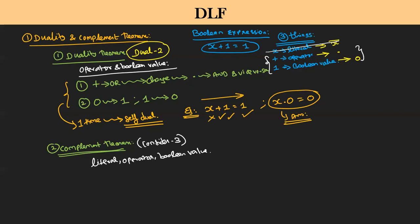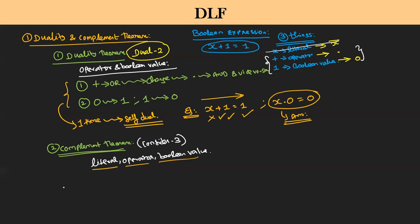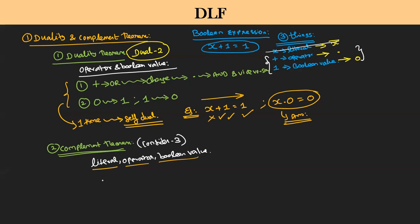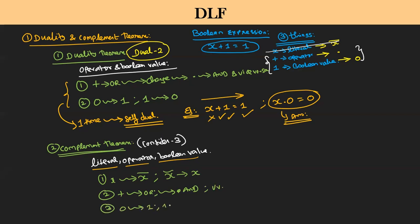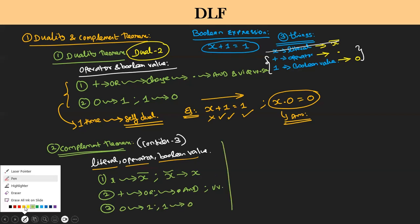Can we go to the complement theorem? For complement theorem, three persons are there. First person is literal — if you have x, convert to x-bar, or if you have x-bar, convert to x. Operator: plus changes to dot (AND), and vice versa. Third: 0 becomes 1, and 1 becomes 0. Very simple — all three are applicable here.